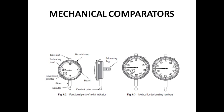Dial gauges are used along with V-blocks in a metrology lab to check roundness. A dial gauge is also part of standard measuring devices such as bore gauges, depth gauges, and snap gauges.